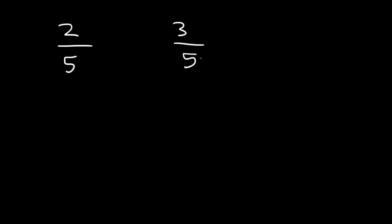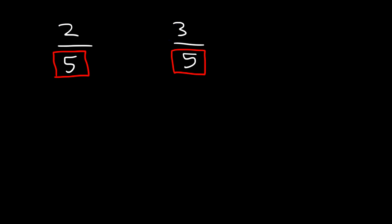Which fraction is greater? In this example, notice that the denominator of both fractions has the same value. When the denominator has the same value, then all you need to do is compare the numbers on top — that is, the numerators of the fraction. 3 is greater than 2, so therefore 3 over 5 is greater than 2 over 5.